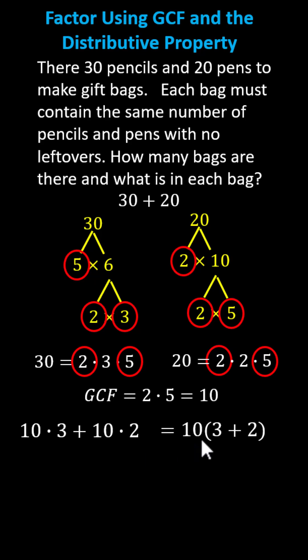30 plus 20 is equal to 10 times the sum of 3 and 2. And now we interpret the factored form to answer the question. The 10 indicates how many gift bags there are, which was the greatest common factor.